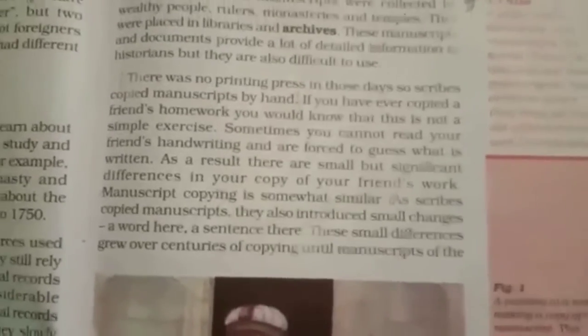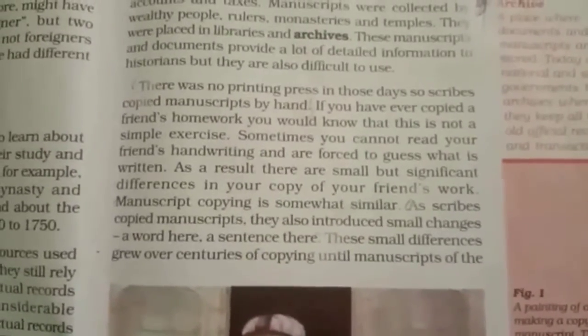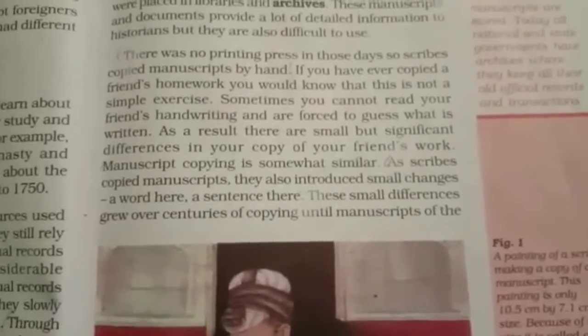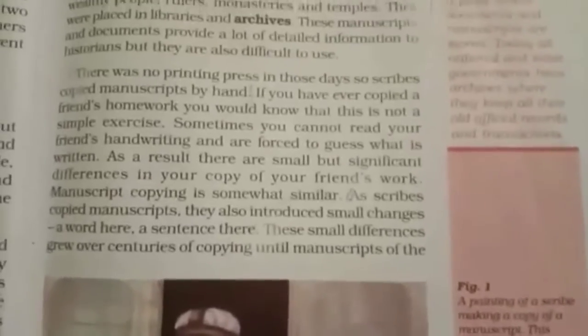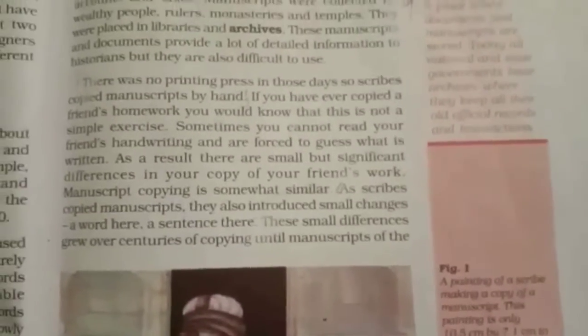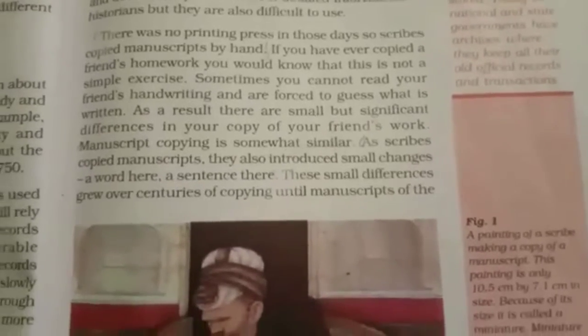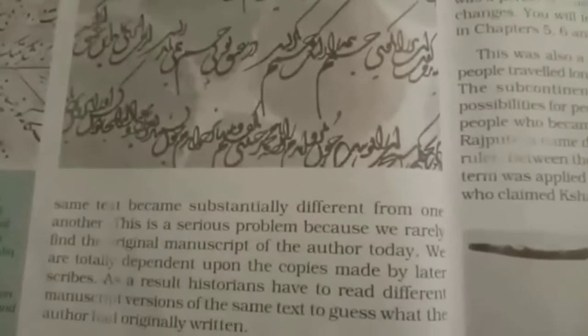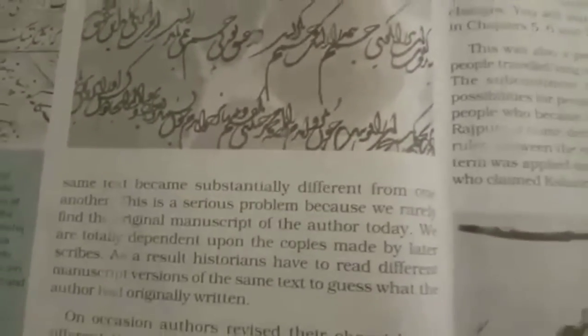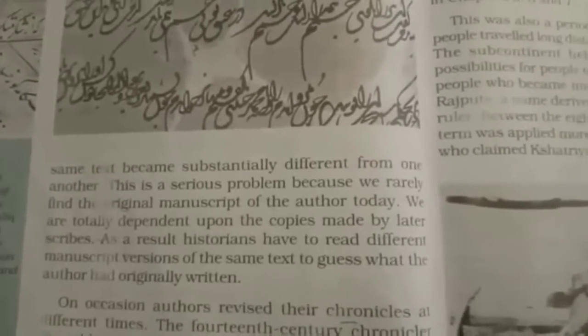Now there was no printing press in those days, so scribes copied manuscripts by hand. As scribes copied manuscripts, they also introduced small changes — a word here and there. These small changes grew over centuries of copying until manuscripts of the same text became substantially different from one another. This caused problems for historians, who had to guess what the original correct information was.